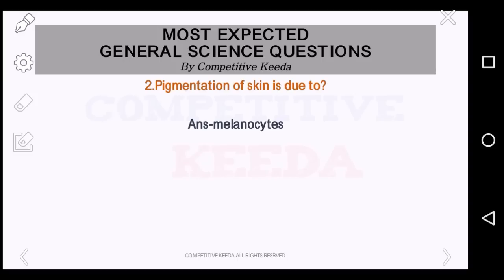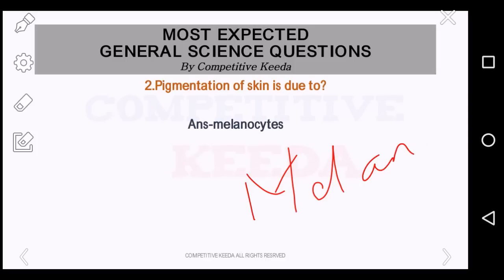Pigmentation of skin is due to what? Friends, remember melanin is the pigment. Melanin is the pigment due to which the skin gets its characteristic colour, and these pigment-forming cells are known as melanocytes. So melanocytes give rise to this melanin pigment.